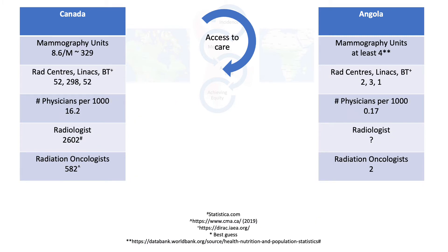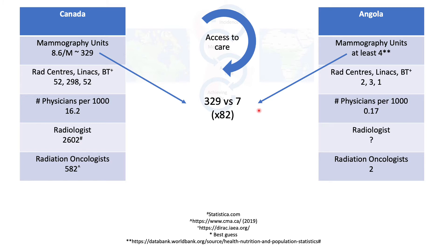Regarding access to care and technology: in Canada there are roughly 8.6 mammography units per million, totaling about 329, versus only 4 to 7 in Angola, with some mobile units now being introduced. For radiation therapy, Canada has about 52 centers, 298 linacs, and 52 brachytherapy machines, versus 2 centers, 3 linacs, and 1 brachytherapy machine in Angola.